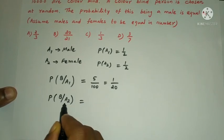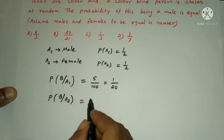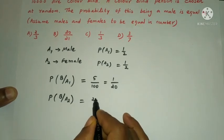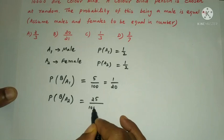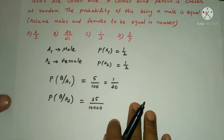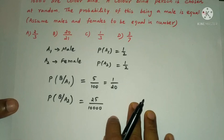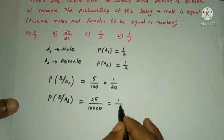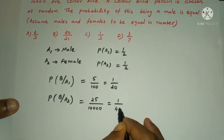Female colorblind person: 25 out of 10,000. Canceling, that gives 1/400.